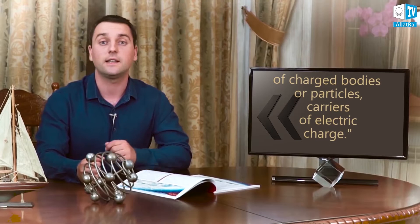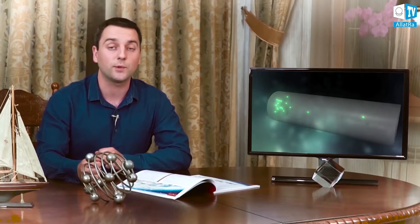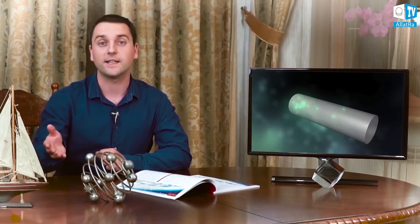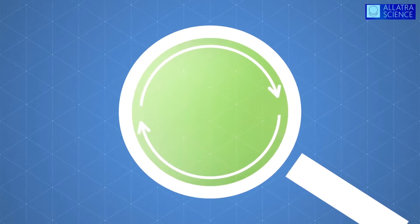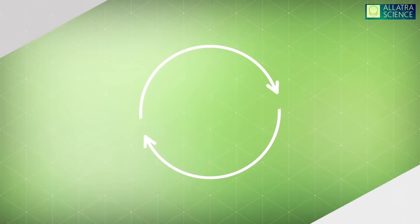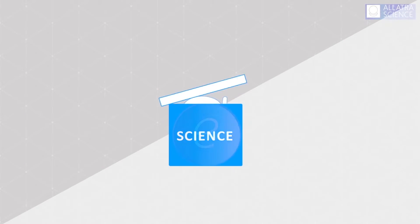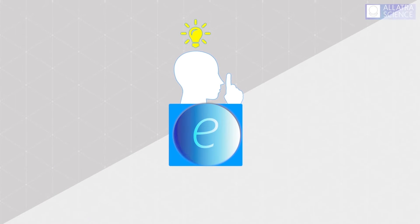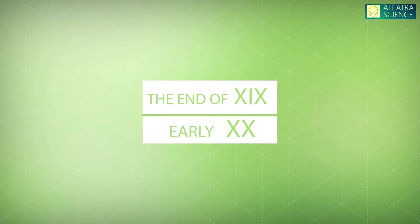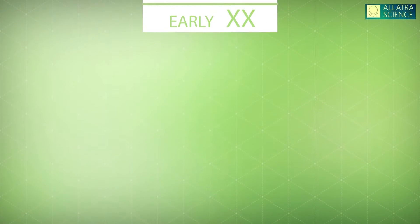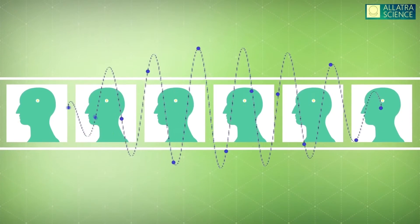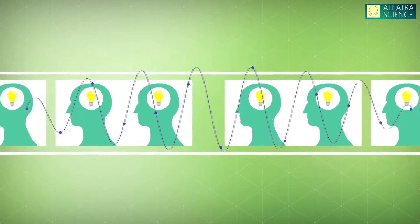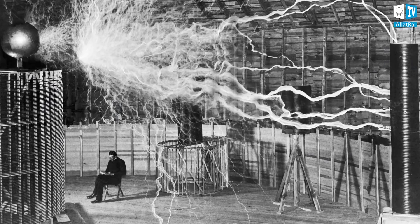It is known that electricity is not a continuous stream but is transformed in portions, discretely. Almost all the main data about the electron which science operates with until now had been acquired at the turn of the late 19th and early 20th centuries. In particular, this concerns the idea of the wave nature of the electron. It is enough to recall the work of Nikola Tesla and his study on the generation and wireless transmission of energy at a distance.